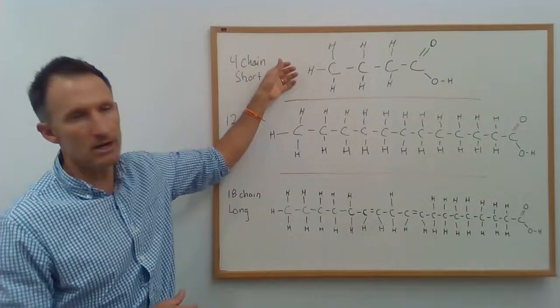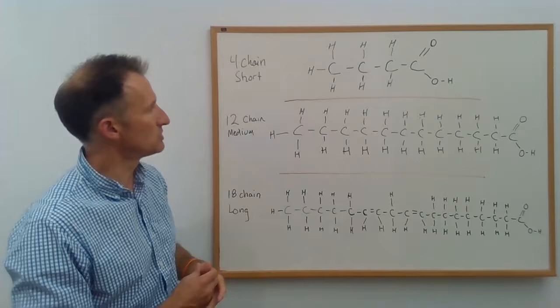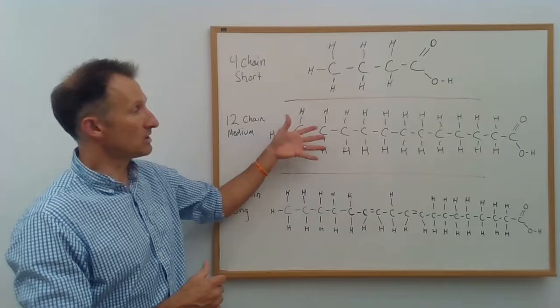So short chain are very rare in nature. They're actually synthesized in your own GI and are considered an immune system superfood. Medium chain are much less rare in nature,